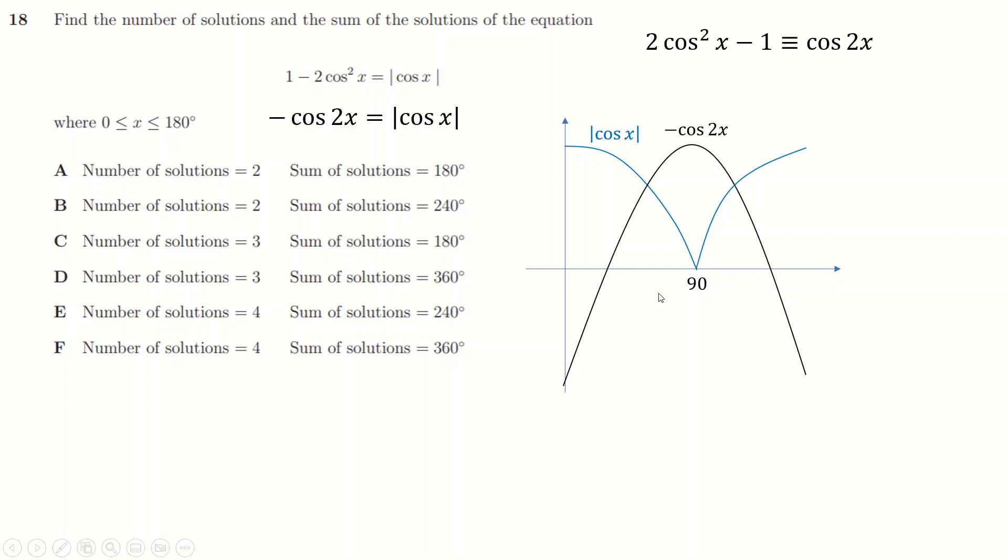Now we're just being asked: well how many solutions do these things have? Clearly two. And now you can see that the terribleness of this curve here, which isn't this graph at all, doesn't matter because all I'm doing is counting the two intersections. So the answer is either A or B. What's the sum of them?